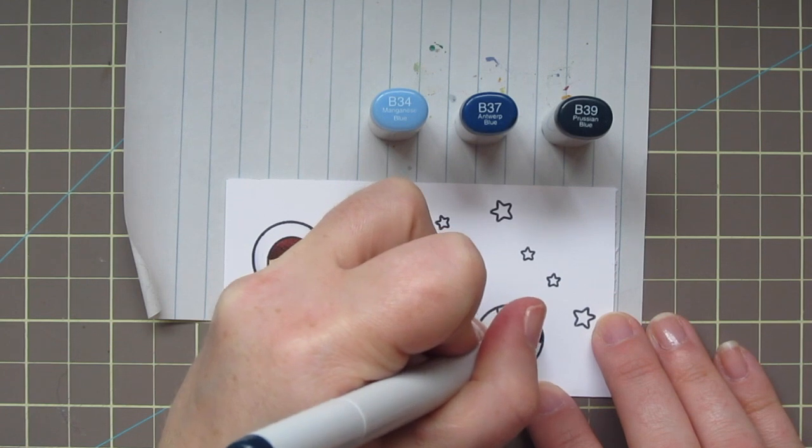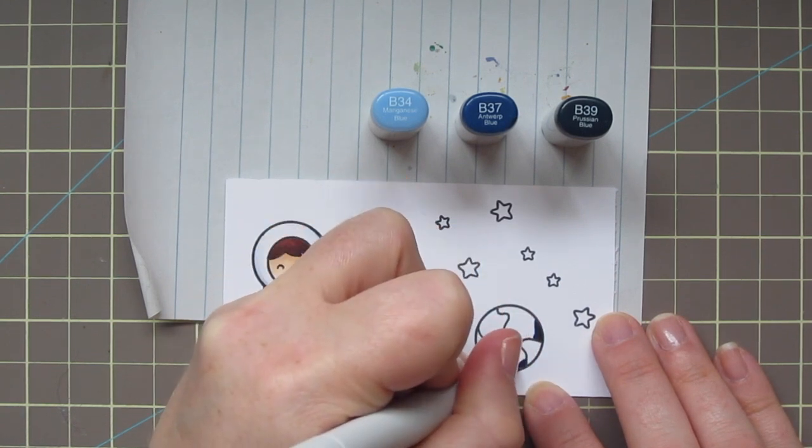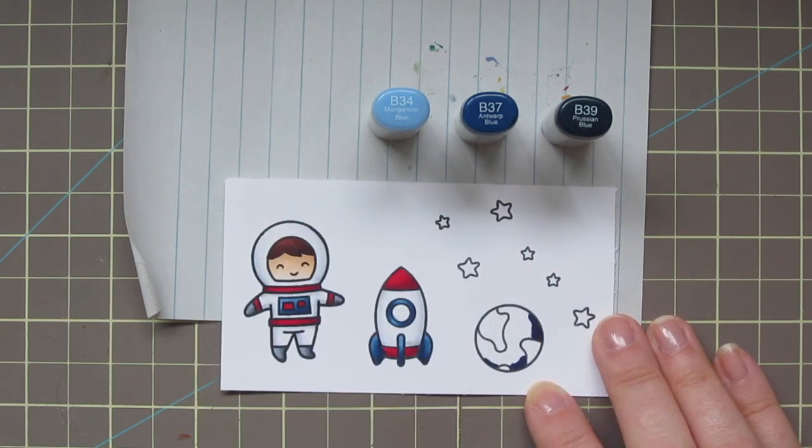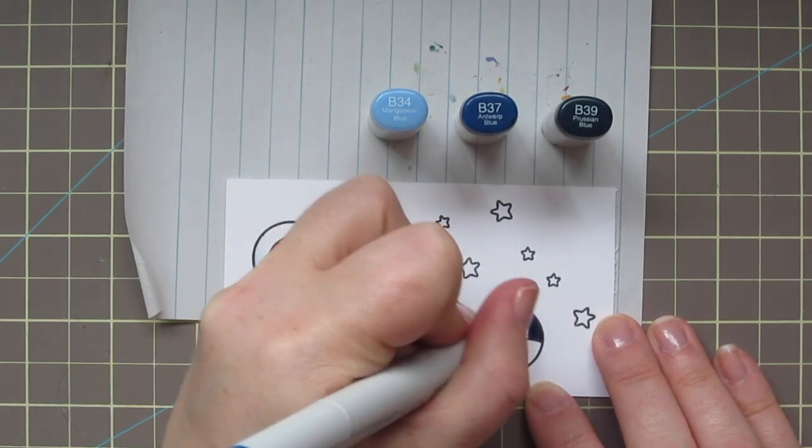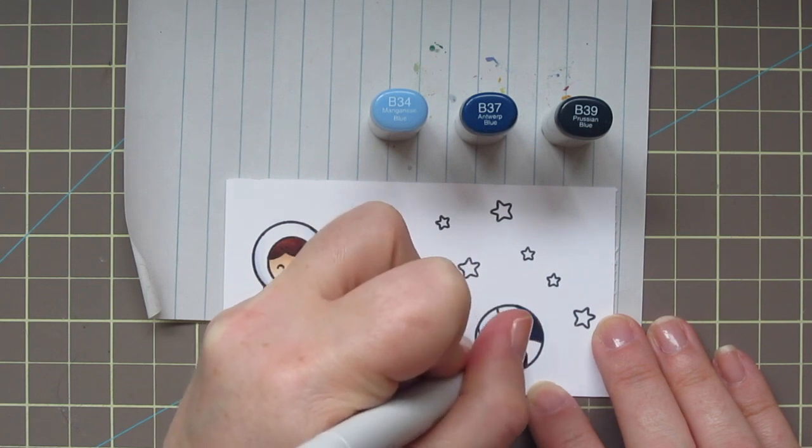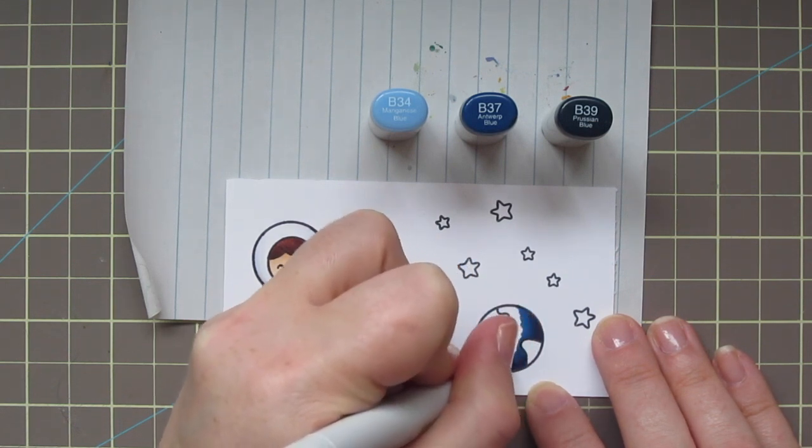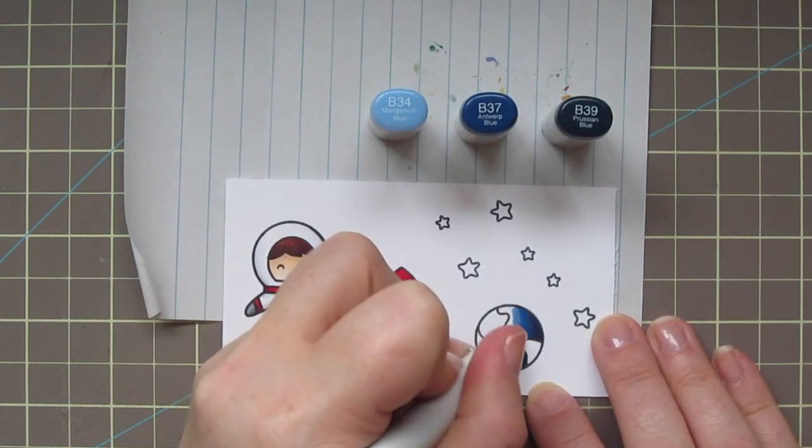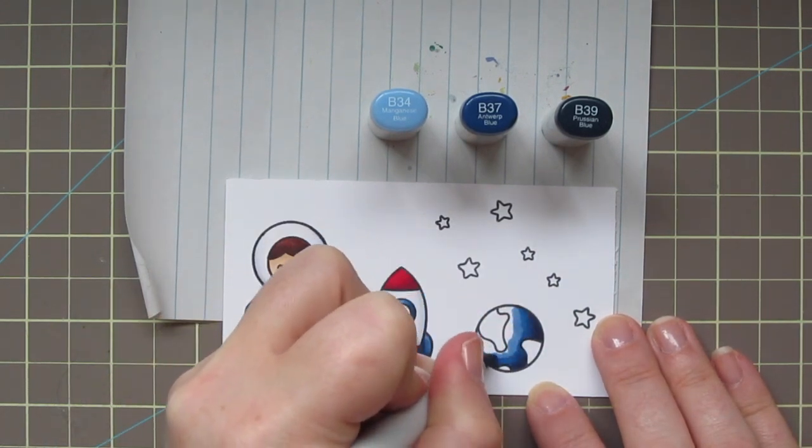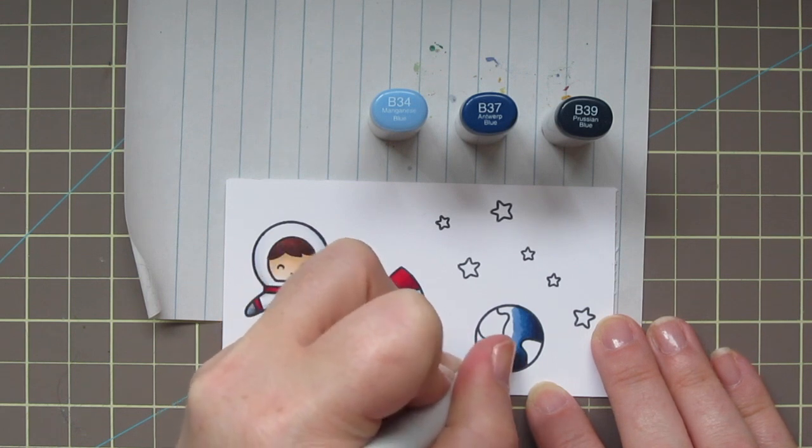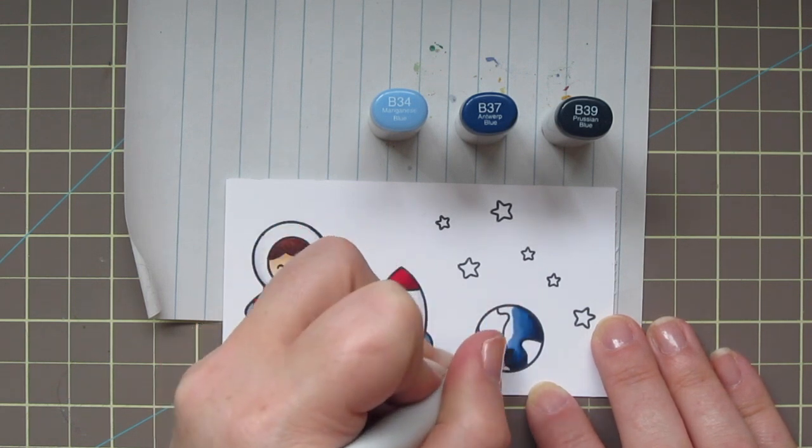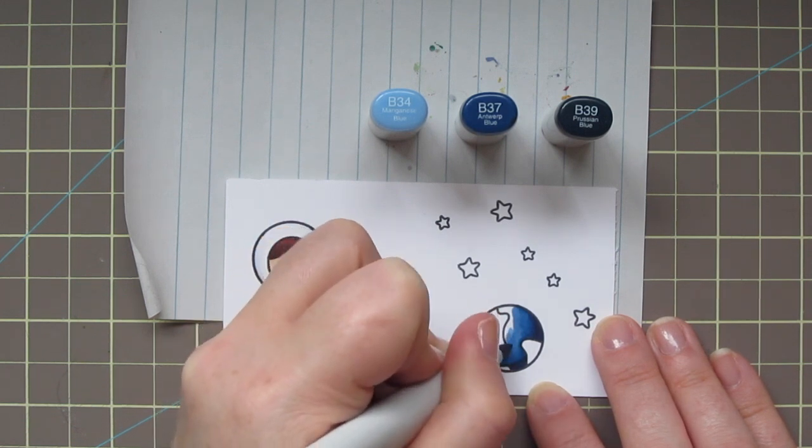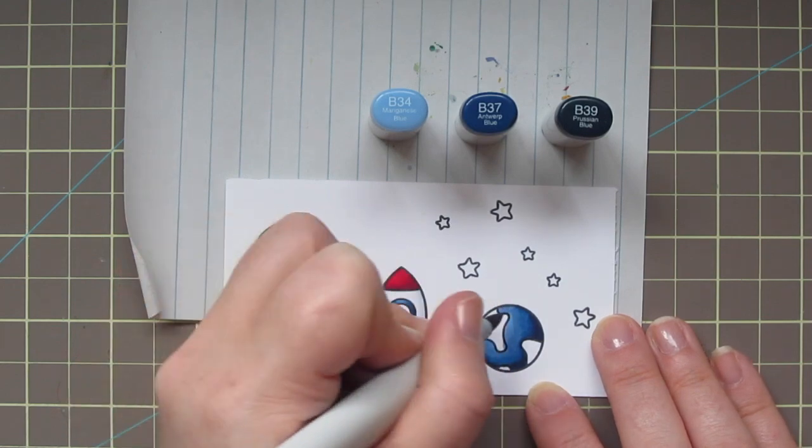While I have those colors out, I decided to go ahead and do the ocean part of my earth with those same three shades of blue. That way I have some consistency across all three of my images. So I just started with that B-39 on the dark side that's going to be the farthest away from the sun, since I'm imagining my sun is on the left. And blended out with the B-37 just a bit. And then really added a lot of that B-34 on the left hand side, since that side would be day, and the other side would be night.